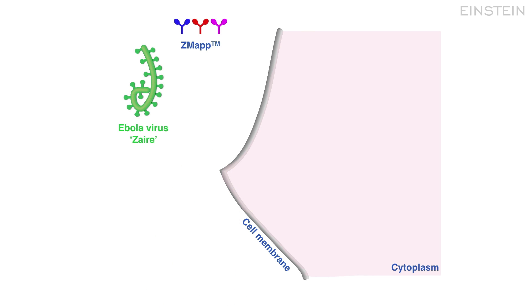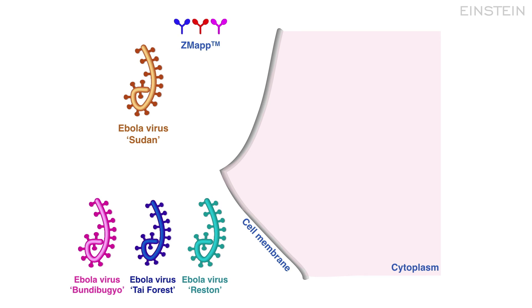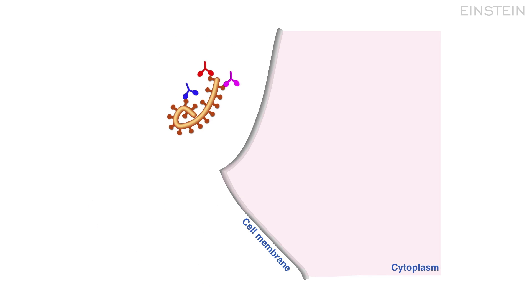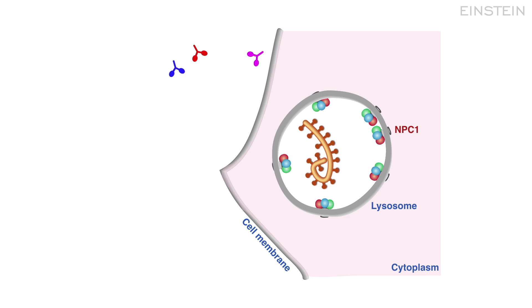ZMAP is great, but it only works against one strain of the virus, Ebola Zaire. There are other strains of the virus that also cause disease, and ZMAP doesn't work against them because the antibodies don't recognize these different viruses that look a little different on the outside. This allows the virus to escape the antibodies and start an infection.